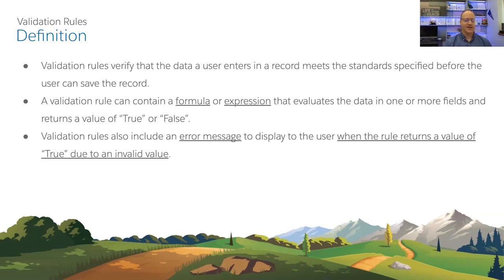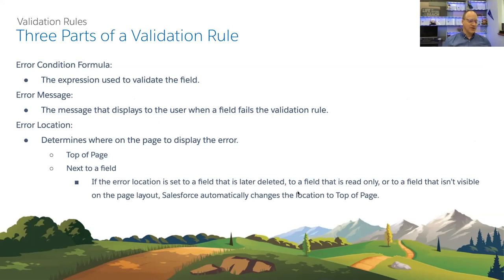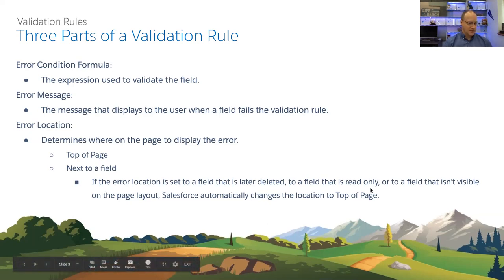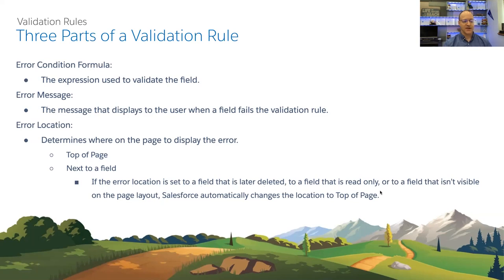Three important parts of a validation rule: first, the error condition formula — the formula used to evaluate the actual data. Second, the error message — displayed to the user when the formula evaluates to true. Third, the error location — determines where on the page to display the message, either next to the field or at the top of the page. If the error location is set to a field the user can't see or is read-only, it will display at the top of the page.